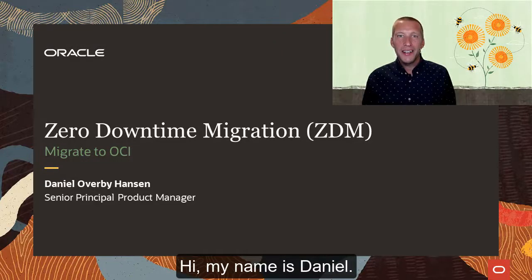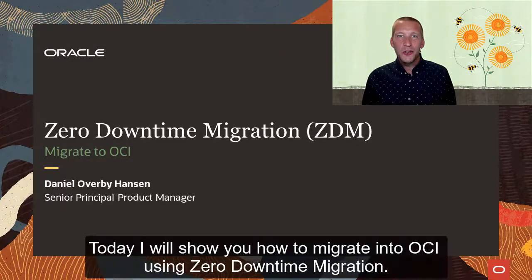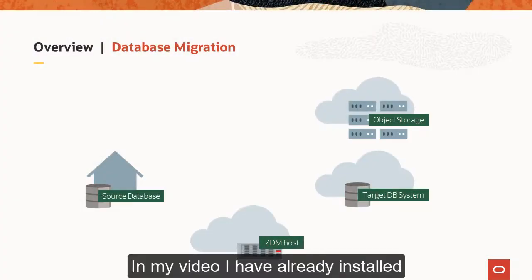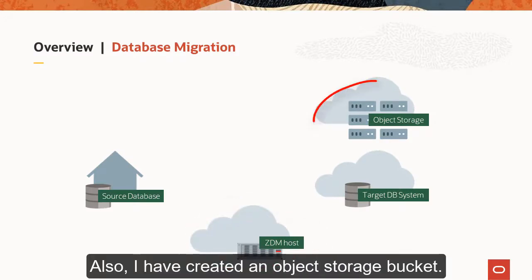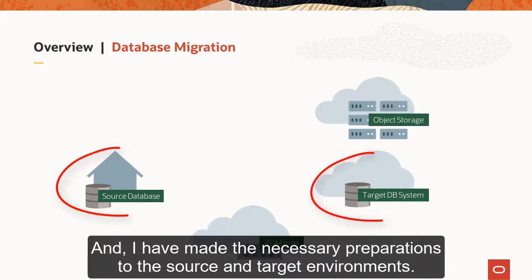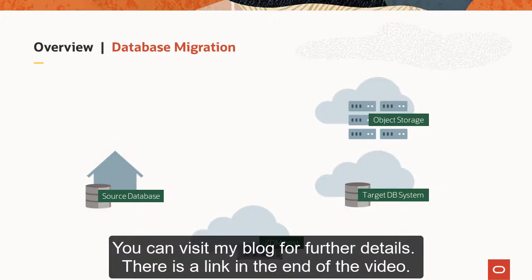Hi, my name is Daniel. Today I'll show you how to migrate into OCI using Zero Downtime Migration. In my video I have already installed a ZDM service host. I have also created an object storage bucket and made the necessary preparations to the source and target environments. You can visit my blog for further details — there's a link at the end of the video.